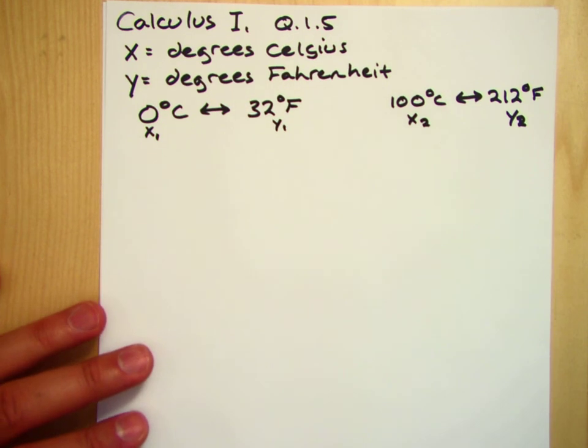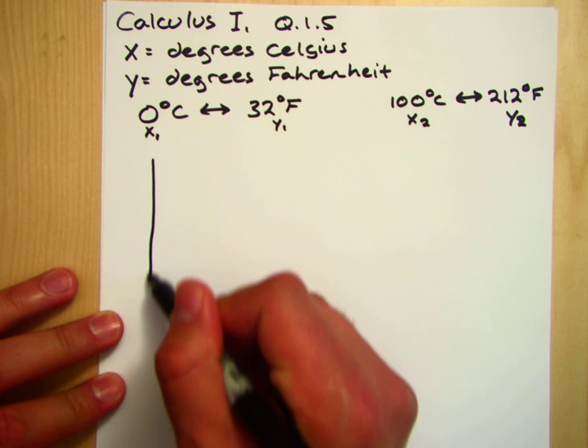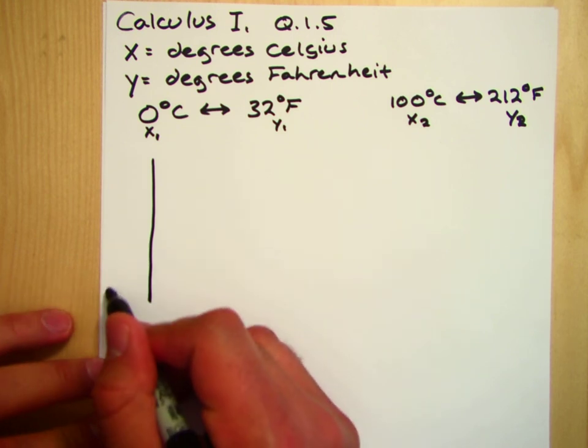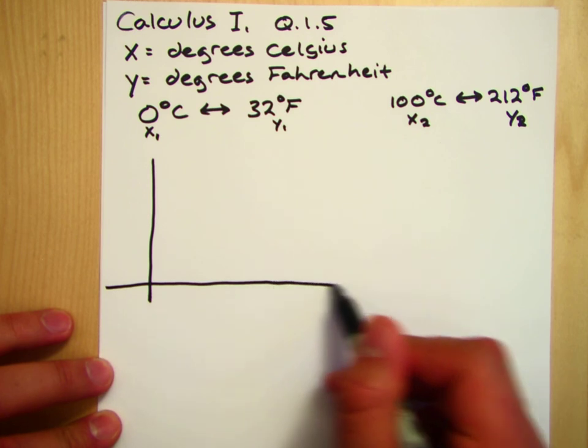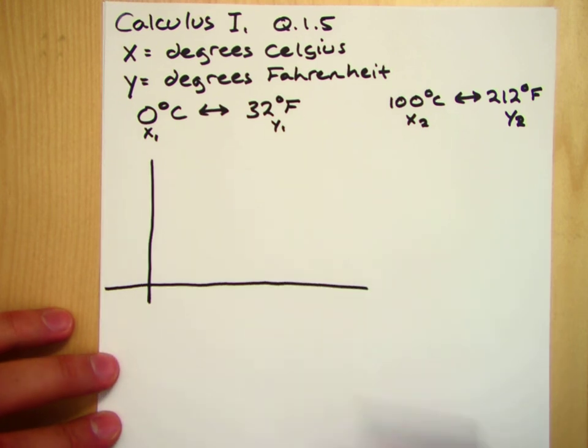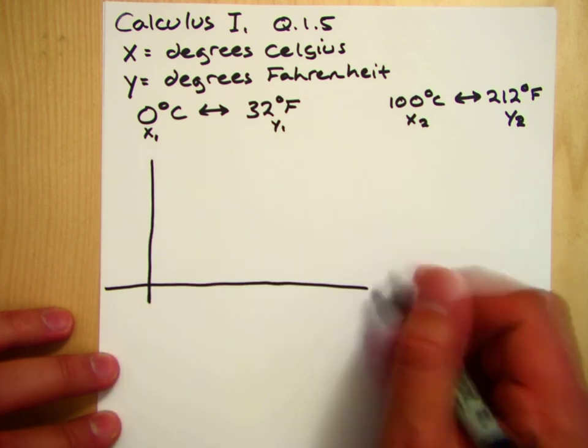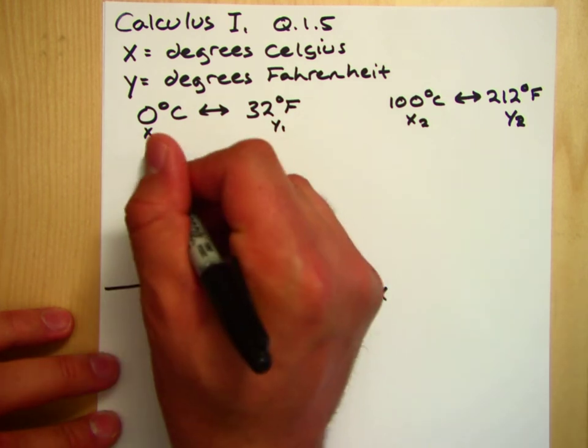So let's plot these. Zero degrees Celsius corresponds to, so this is x, this is y.